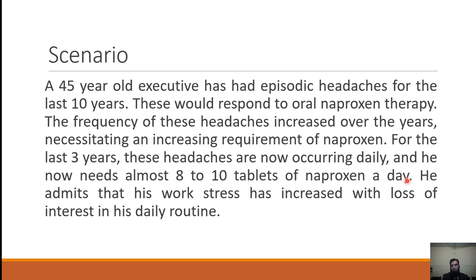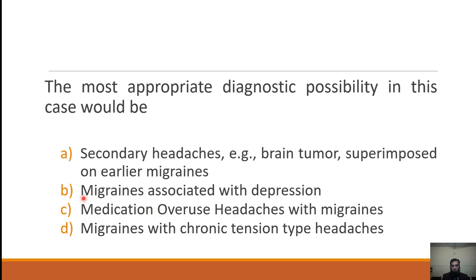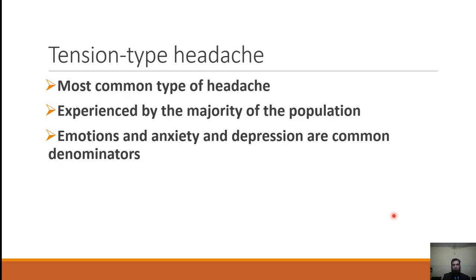The diagnosis here is medication overuse headache with migraines. What happens is that patients having tension type headache or migraine start taking painkillers and ultimately become dependent on them, needing increasing amounts. Eventually, the medication overuse itself causes another kind of headache called medication overuse headache. This responds only to stopping the medication overuse. You must look for this whenever someone is taking painkillers above a threshold.